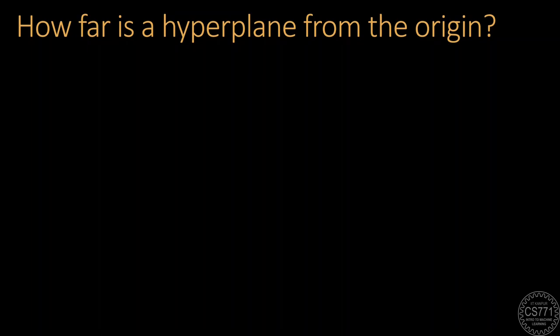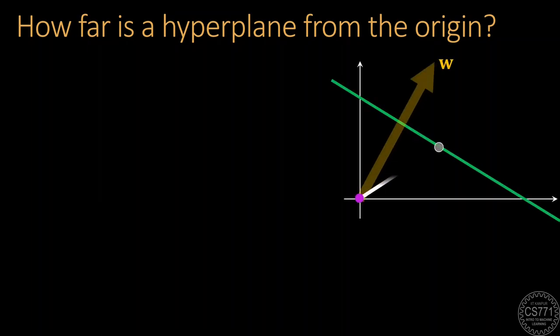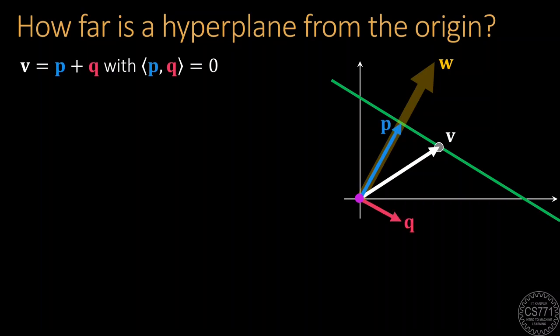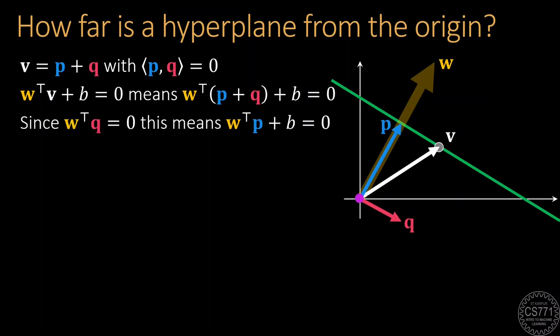Coming back to our original problem, let V be the point on the hyperplane closest to the origin. Let us decompose V along and perpendicular to W. Since V lies on the hyperplane, we must have W transpose V plus B equal to 0, and we find that W transpose P plus B is also equal to 0 since Q is perpendicular to W by design. Note that this means that P also lies on the hyperplane.